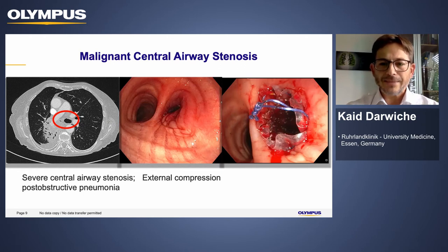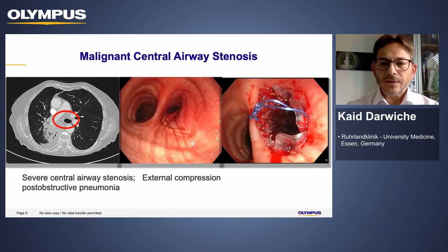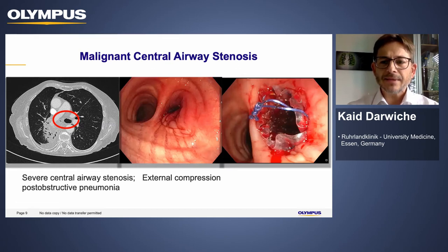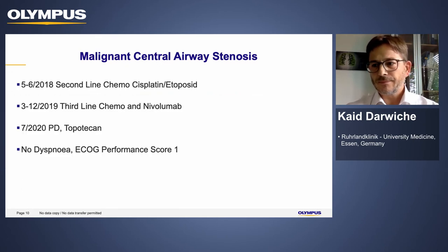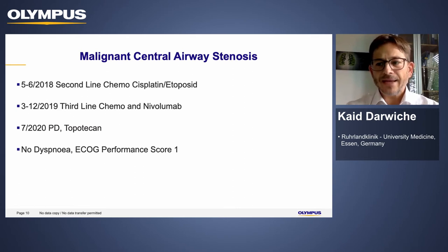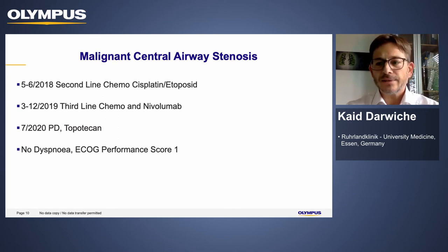On the right image, the Hanaro stent which has been placed in the right main stem bronchus is visible. On the stent side, there is a blue thread which can be grasped by forceps, and therefore the stent can easily be repositioned in case of dislocation. Since then, more chemo and immunotherapy lines have been given to the patient, which is quite an uncommon biology for small cell lung cancer.